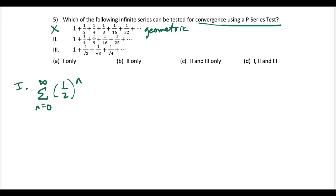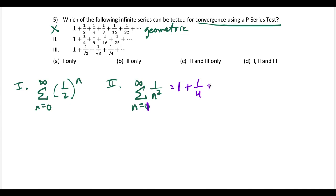The second series can be repackaged as the series from n=1 to infinity of 1 over n squared, since all the denominators are perfect squares. Starting at n=1, we'd have 1/1 + 1/4 + 1/9, which matches. This is a convergent p-series, so we can test it using the p-series test. Two is good.